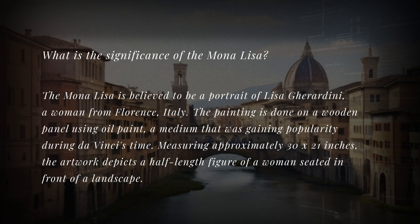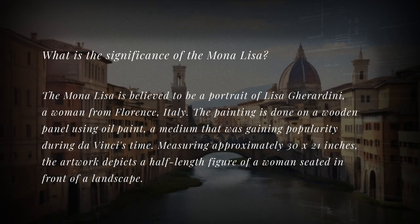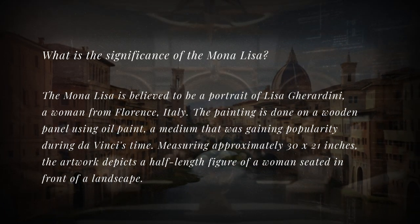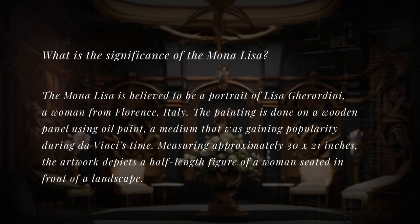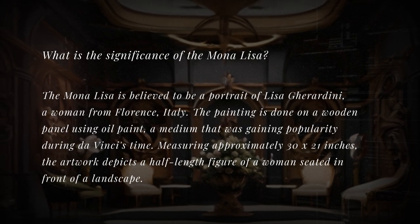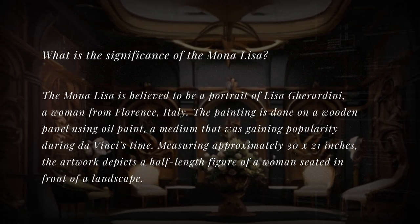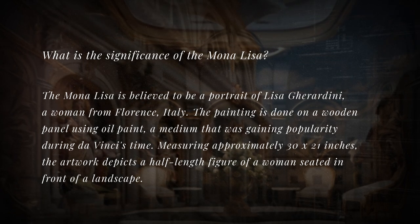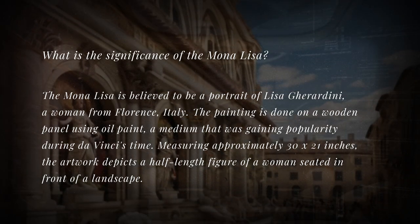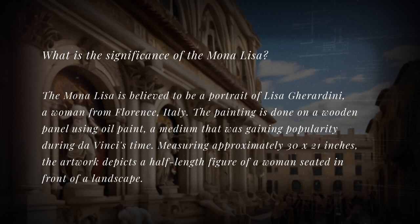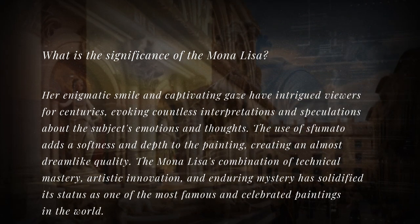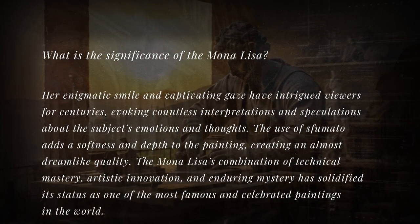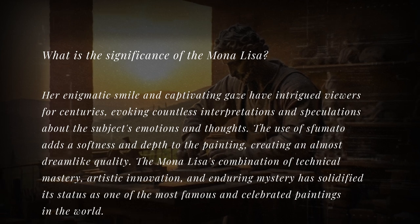What is the significance of the Mona Lisa? The Mona Lisa is believed to be a portrait of Lisa Gherardini, a woman from Florence, Italy. The painting is done on a wooden panel using oil paint, a medium that was gaining popularity during da Vinci's time. Measuring approximately 30 by 21 inches, the artwork depicts a half-length figure of a woman seated in front of a landscape. Her enigmatic smile and captivating gaze have intrigued viewers for centuries, evoking countless interpretations and speculations about the subject's emotions and thoughts.